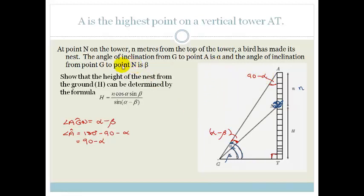Next, it says show that the height of the nest from the ground can be determined by the formula. So they want this bit here. N cos alpha sine beta over sine alpha minus beta.